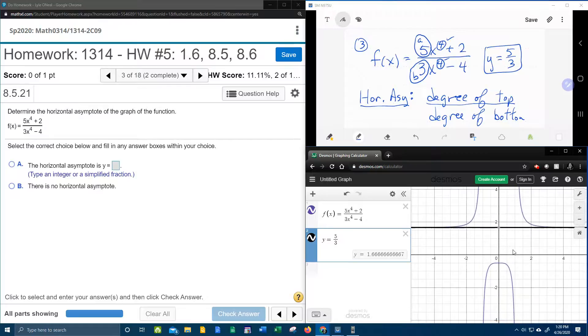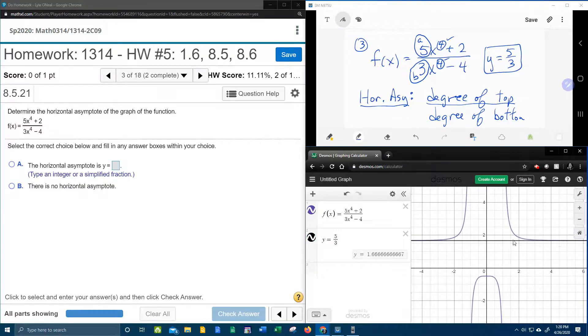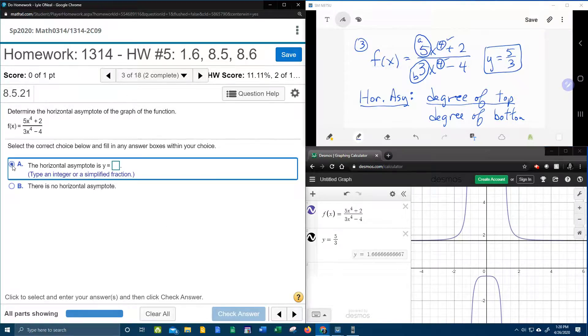Y equals five-thirds. Bam. Look at that. If I zoom in, can you see that? That the graph is approaching, but never touching. Although it looks like it touches, it's just getting so close that you can't really tell the difference. So this looks like our horizontal asymptote.